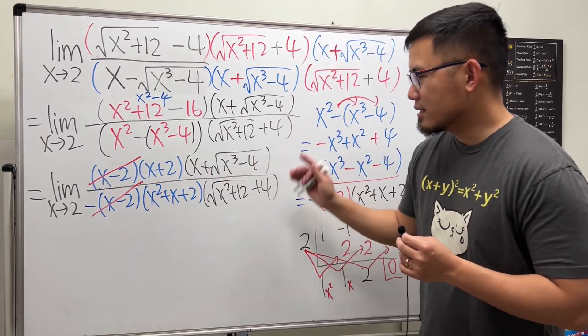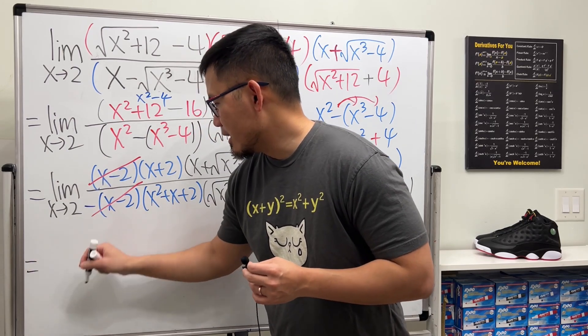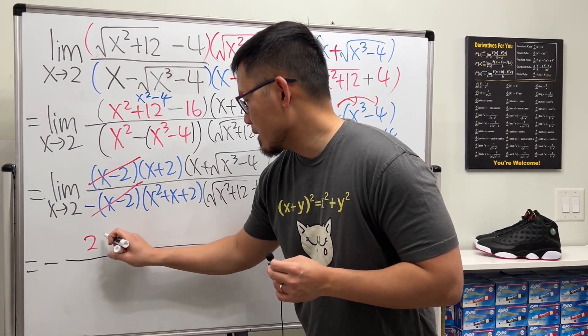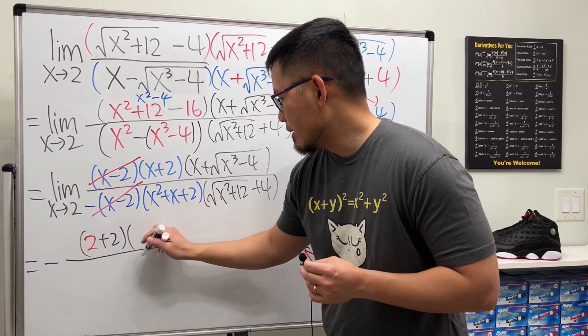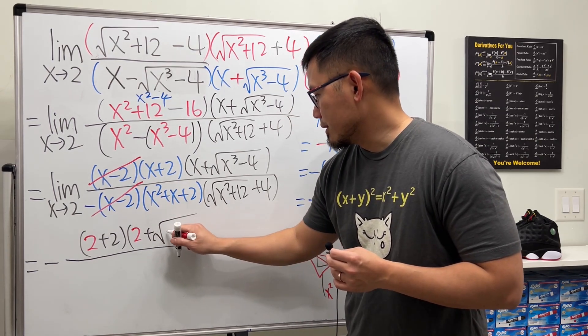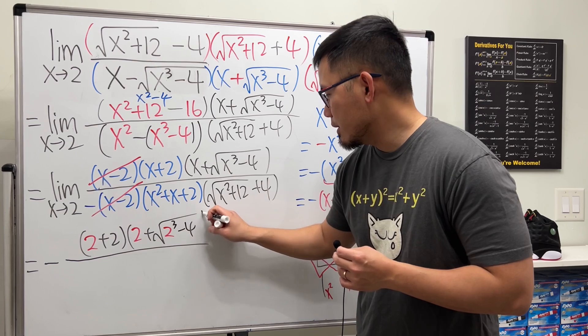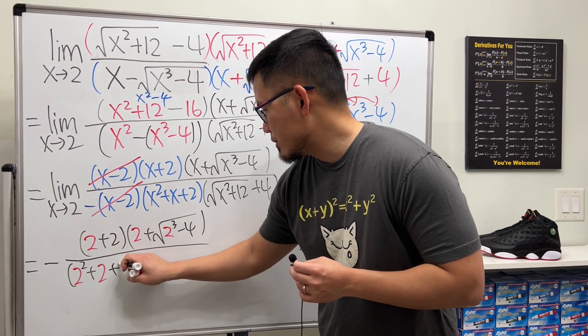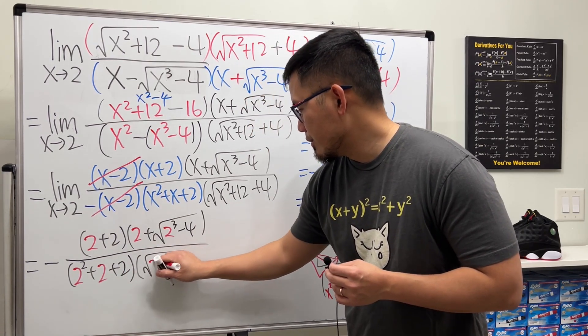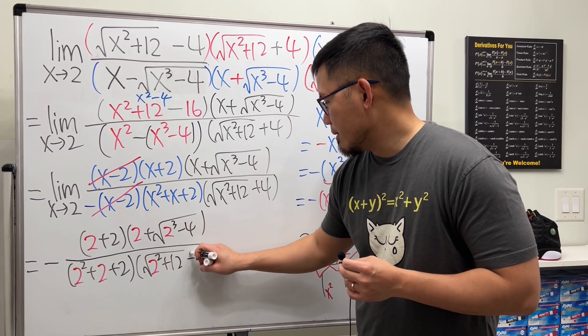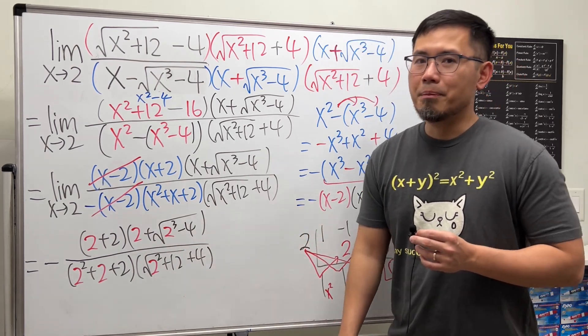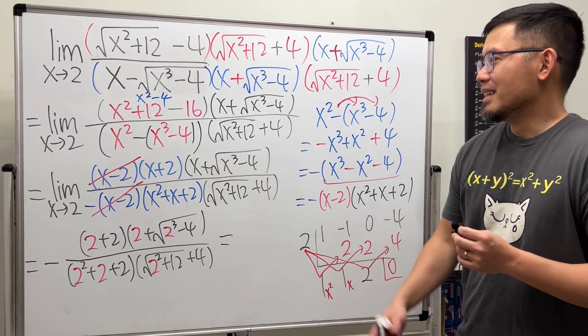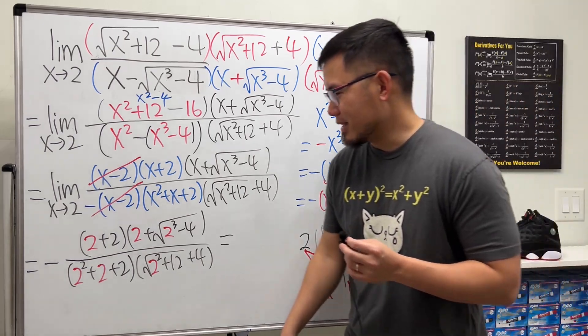We have a negative. Let me just put it down right here, and then put 2 in here. So we have 2 plus 2, and then this right here is 2 plus the square root of 2 to the third power minus 4, over 2 squared plus 2 plus 2, and then square root of 2 squared plus 12. And then of course, the last step is don't make any mistakes on the computation. Otherwise, all the work will be left for nothing, right? So hopefully I don't make a mistake.